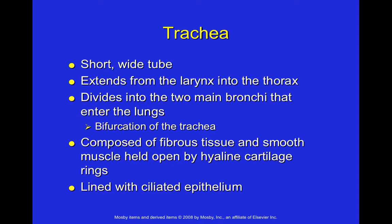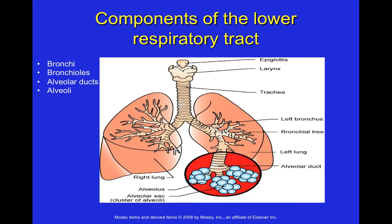The trachea, also called the windpipe, is a short, wide tube extending from the larynx into the thorax. It divides into two main bronchi that enter the lungs — this division is called bifurcation of the trachea. It is composed of fibrous tissue and smooth muscle, and held permanently open by hyaline cartilage rings, so it appears black on an X-ray because it's always filled with air. The trachea is also lined with ciliated epithelial cells covered in mucus to trap and expel foreign material.